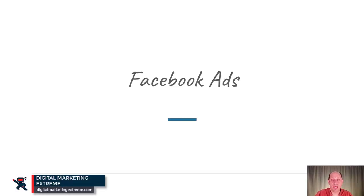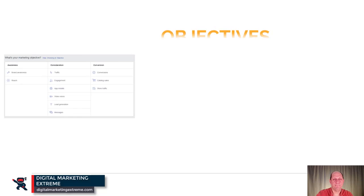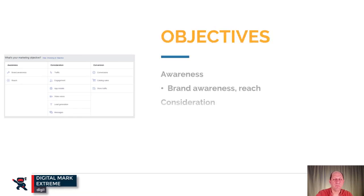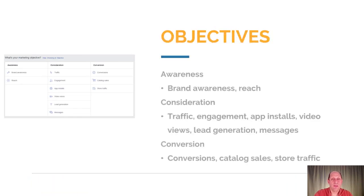Let's now look at the Facebook ads platform. Facebook ads actually start off with the idea of objectives. Facebook breaks these down into three areas: awareness, consideration, and conversion, and then under there have multiple different types.